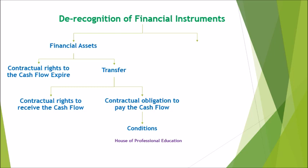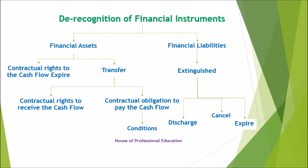Regarding the de-recognition of financial liabilities, an entity shall remove a financial liability or part thereof from its statement of financial position when and only when the obligation specified in the contract is extinguished — i.e., discharged by payment to creditors, cancelled, or expired. An exchange between an existing borrower and lender of a debt instrument with substantially different terms shall be accounted for as an extinguishment of the original financial liability and the recognition of a new financial liability at fair value. Similarly, a substantial modification of the terms of an existing financial liability shall be accounted for as an extinguishment of the original and recognition of a new financial liability at fair value. The difference between the carrying amount of the financial liability extinguished shall be recognized in profit and loss.